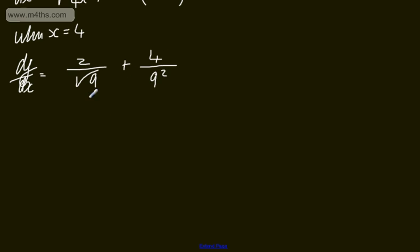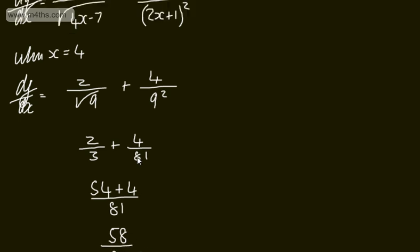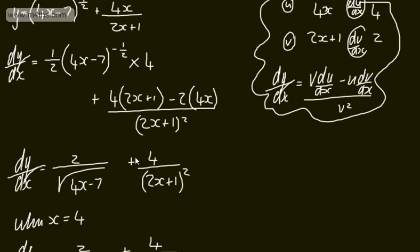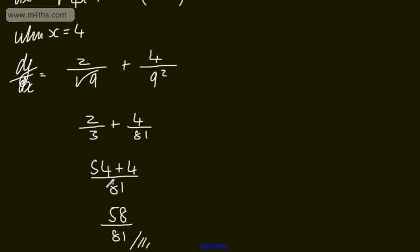We can put this in a calculator or work it out manually. That's going to be 2 over 3 plus 4 over 81. If I convert this up, I can multiply this by 27, so 54 plus 4 over the common denominator of 81, which gives me 58 over 81. So that's the final answer. You can certainly use a calculator for that, and you don't have to simplify, but the final answer should be 58 over 81.